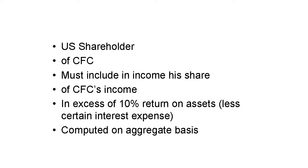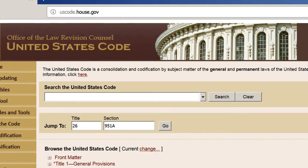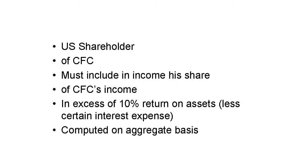This is the third video in the series. As a quick review, Section 951(A) requires every 10% or more U.S. shareholder of a CFC to include in his income every year after 2017 the aggregate income of his CFCs in excess of a 10% return on assets. This inclusion is in addition to Subpart F inclusions, but is calculated by excluding Subpart F income. In this video, I'll provide an example calculation.